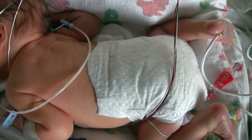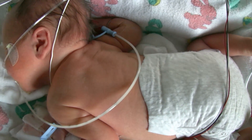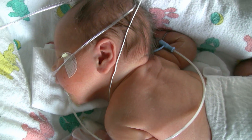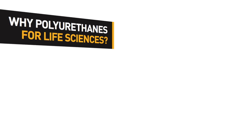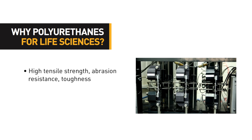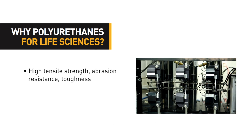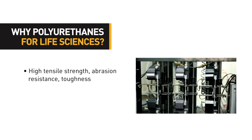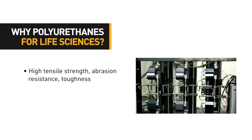The use of polyurethane materials in medical devices has been increasing over the years due to their many desirable characteristics, such as availability in a wide range of durometers spanning the range from approximately 20 Shore A to 80 Shore D, and excellent mechanical properties including high tensile strengths and some of the best abrasion resistance of any polymer.